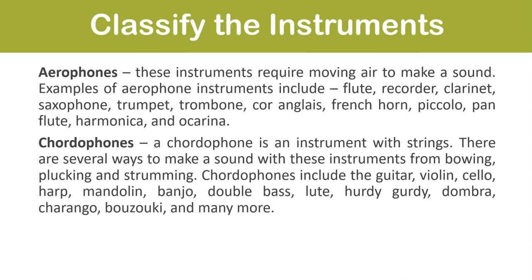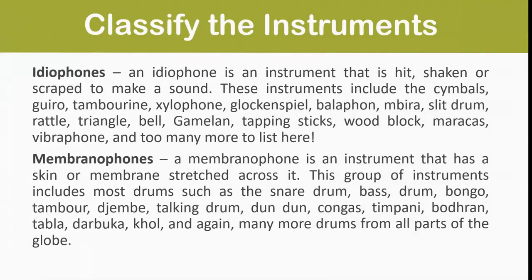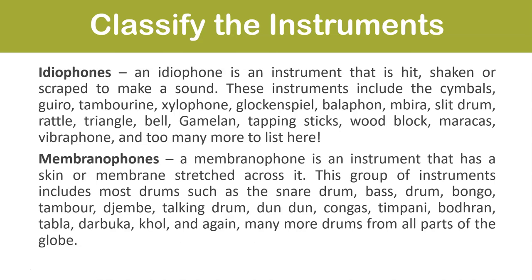Chordophones are instruments with strings. There are several ways to make a sound — bowing, plucking, and strumming. Chordophones include the guitar, violin, cello, harp, mandolin, banjo, double bass, lute, hurdy-gurdy, dombra, charango, bouzouki, and many more.